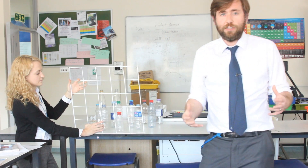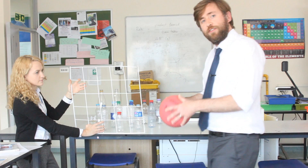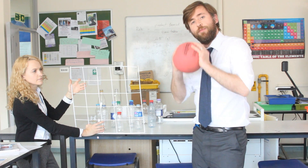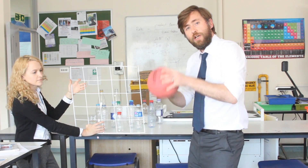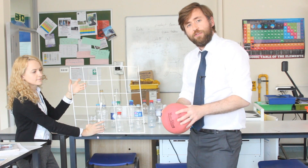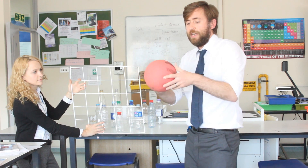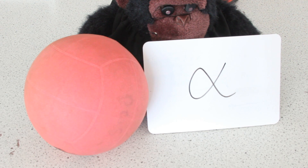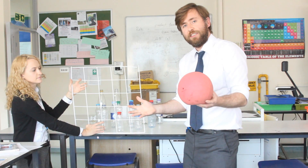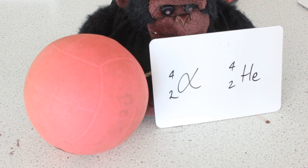You need to know and be able to compare the three different types of radiation because of their ionisation potential and their penetrating power. So this first one is the biggest one — it's the alpha particle. An alpha particle is much more massive than the other two. An alpha particle is made of two protons and two neutrons; it's a helium nucleus.